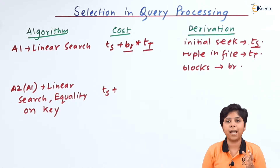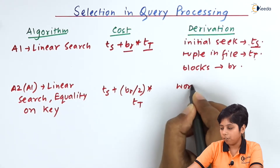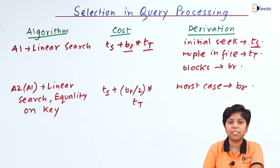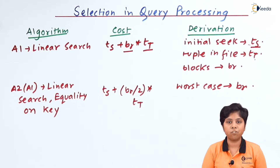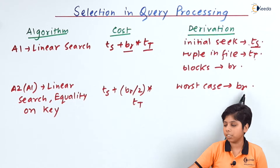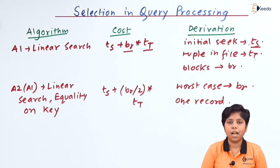So the cost here is ts (initial seek) plus br/2 block transfers, since we access on average half the blocks. In the worst case, all br blocks must be transferred — for example, if the values are Kolkata, Delhi, Delhi, Kolkata, Chennai, Hyderabad, and finally Mumbai, we must search all br blocks to find the tuple where city equals Mumbai. In this worst case, there is still only one record in the output.